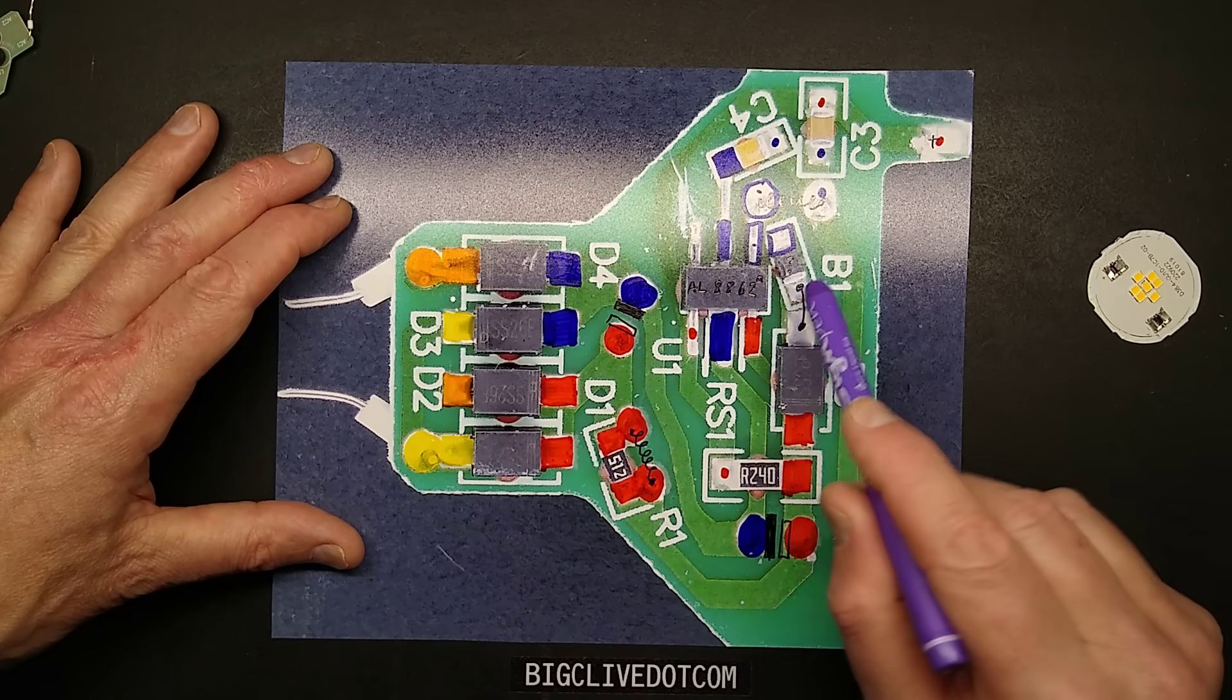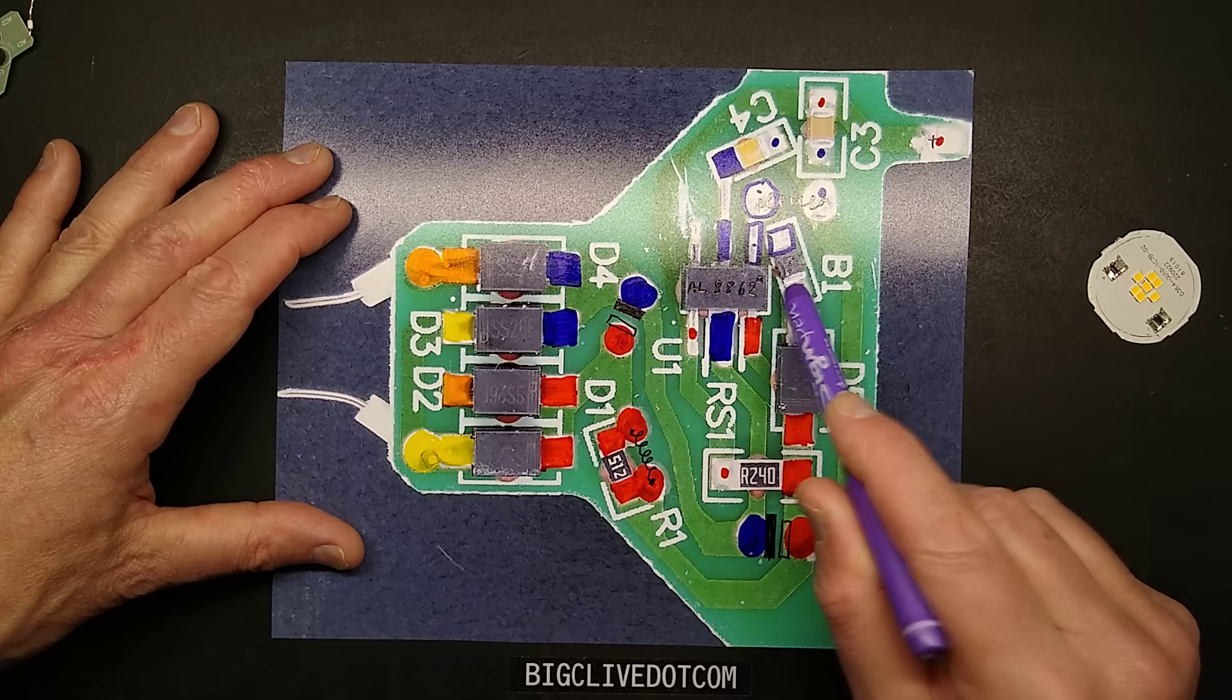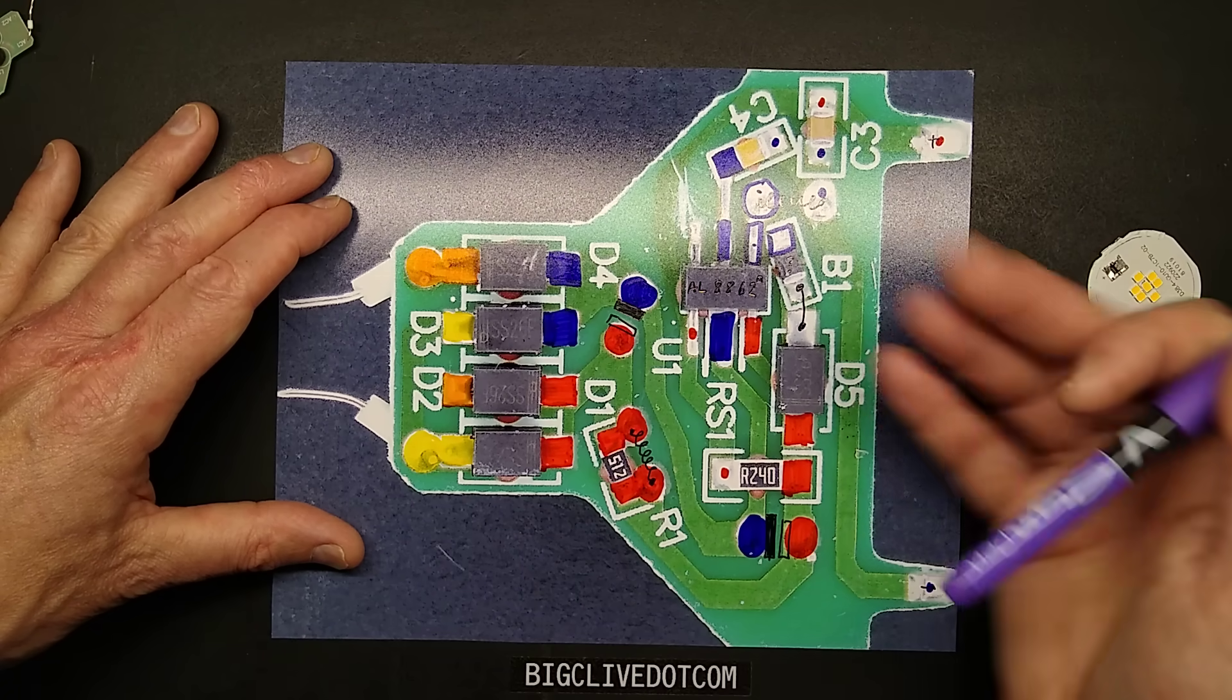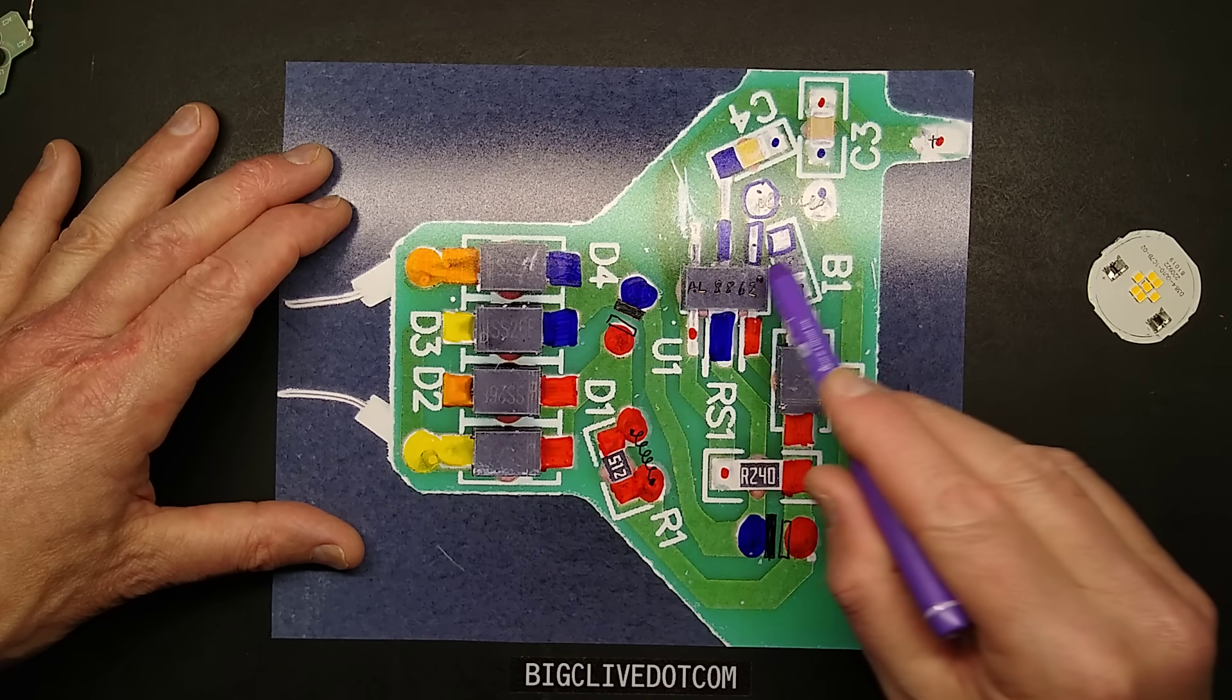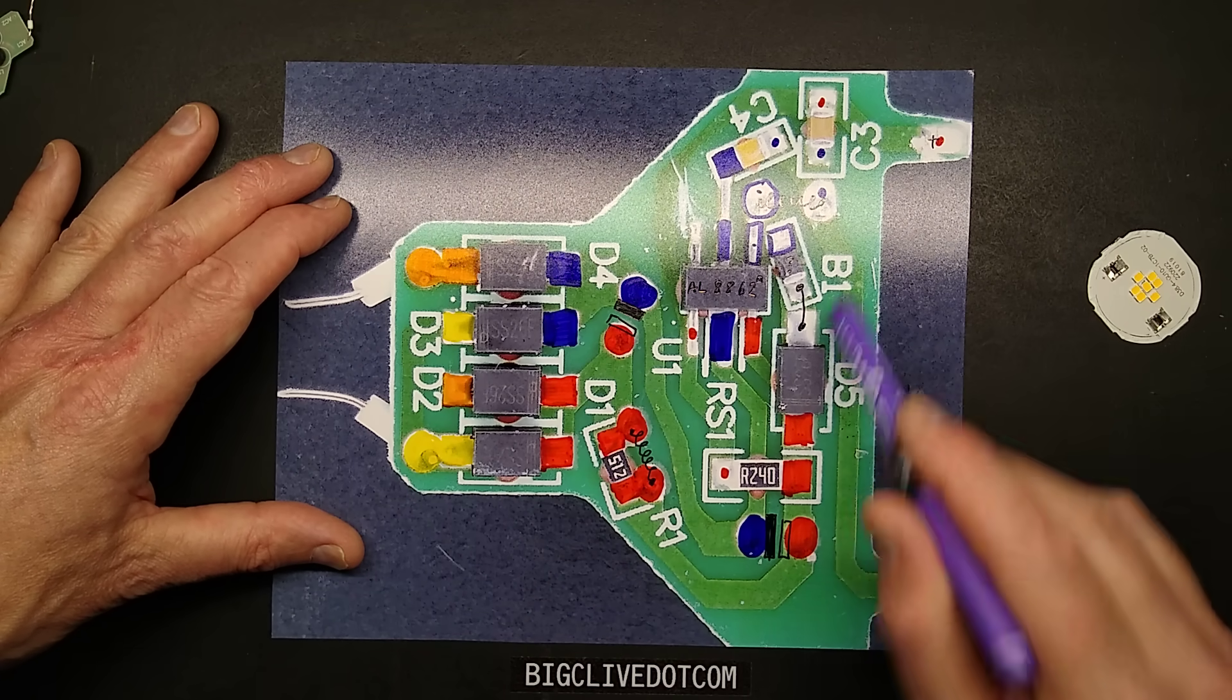I haven't a clue what that component is or what it's for because it's not part of the normal design and it's not like it's been used as a link to jump over a track. I really don't know what B1 is.